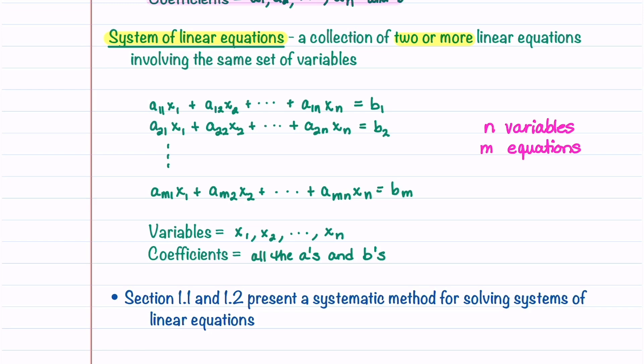A system of linear equations can be written like this, and this system has n variables, x1 through xn, and m equations.